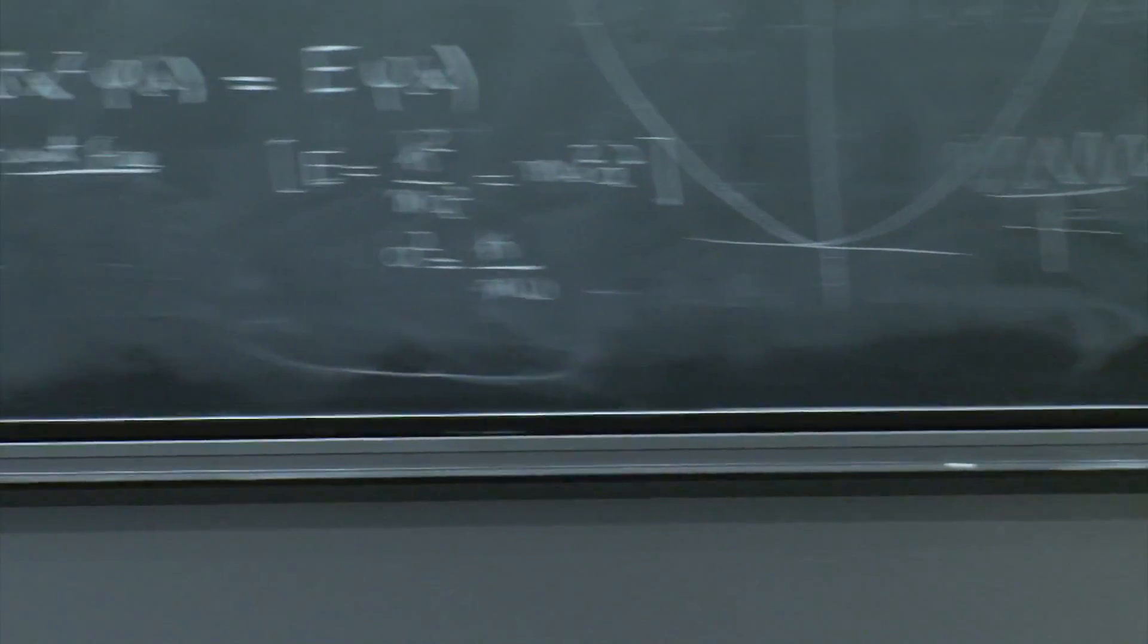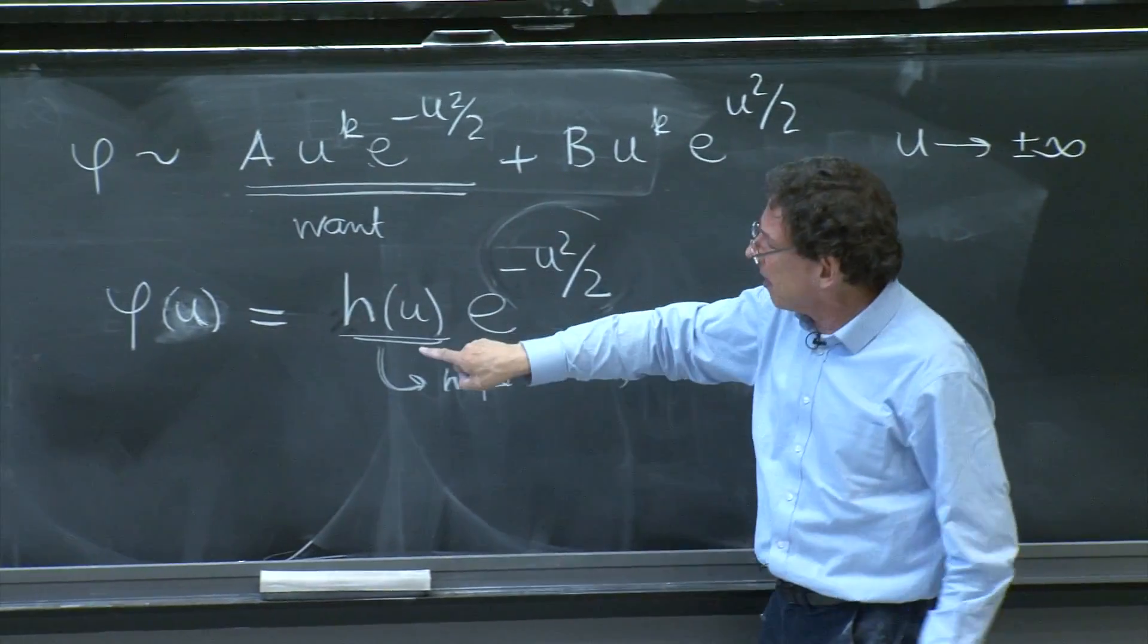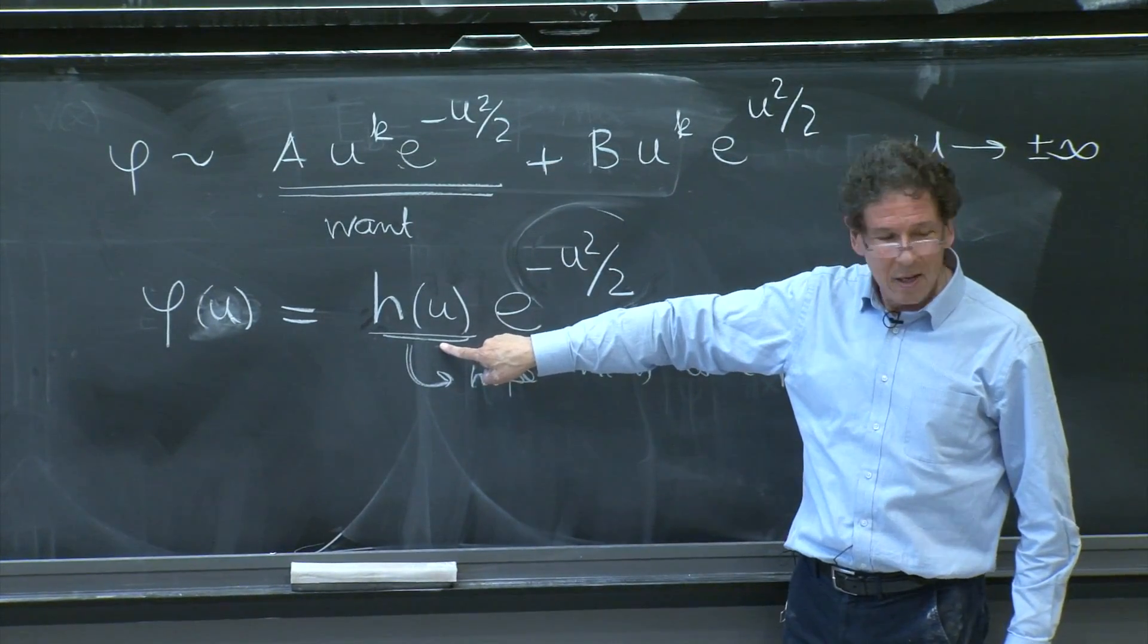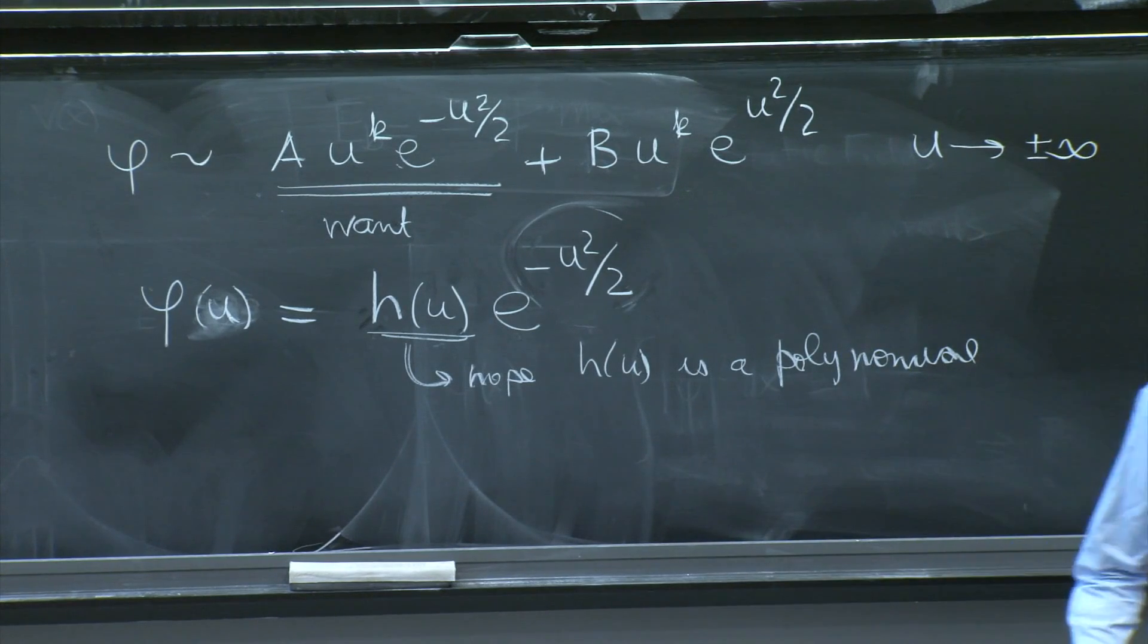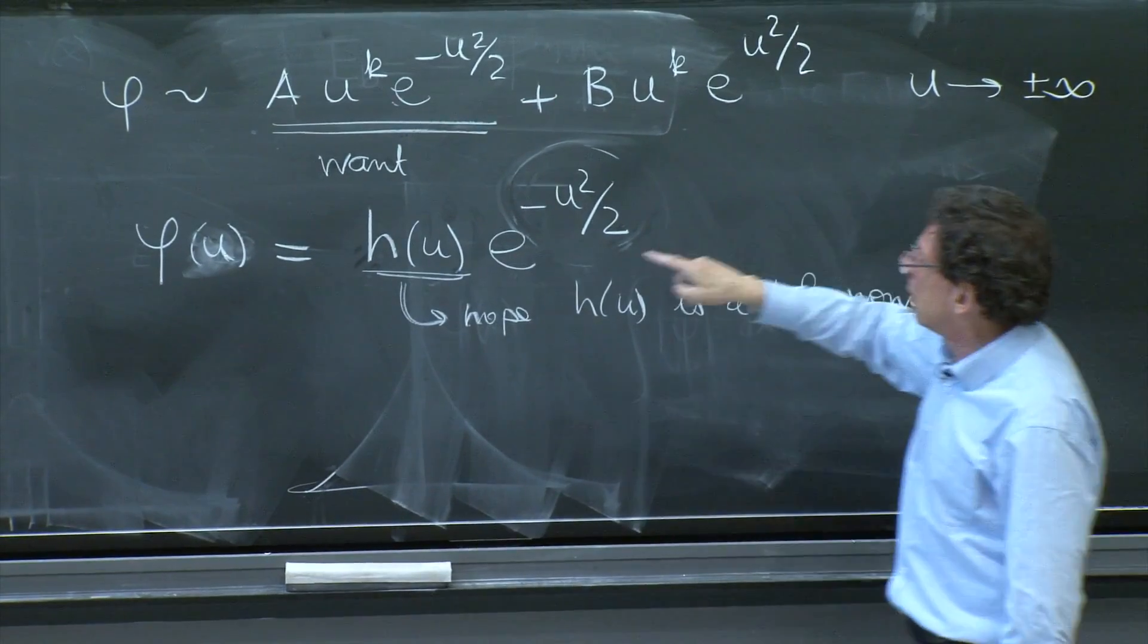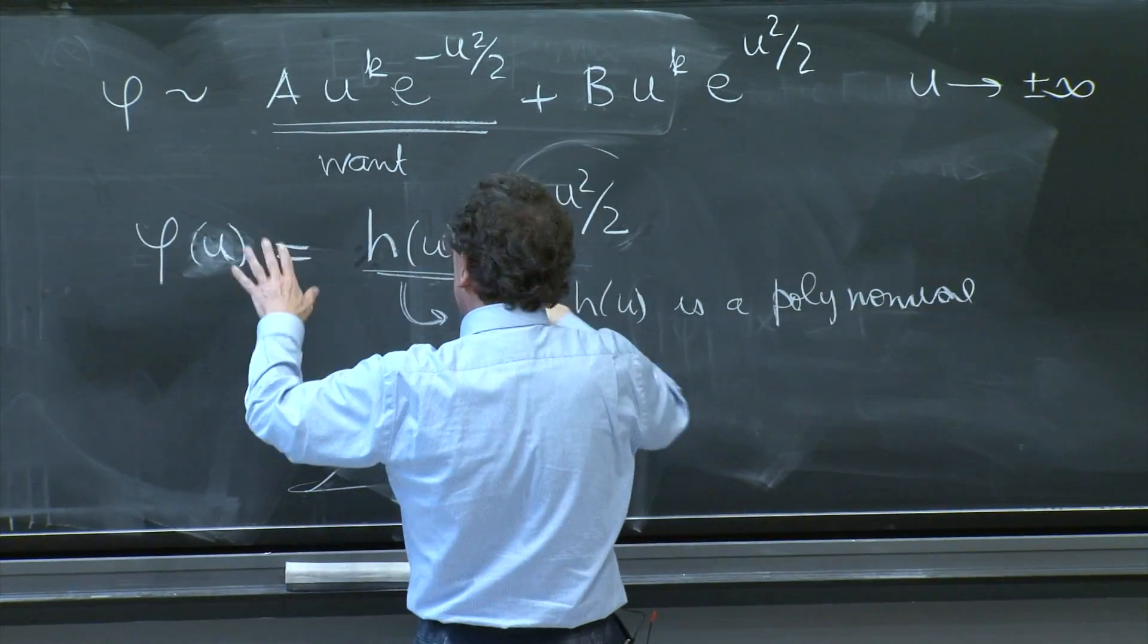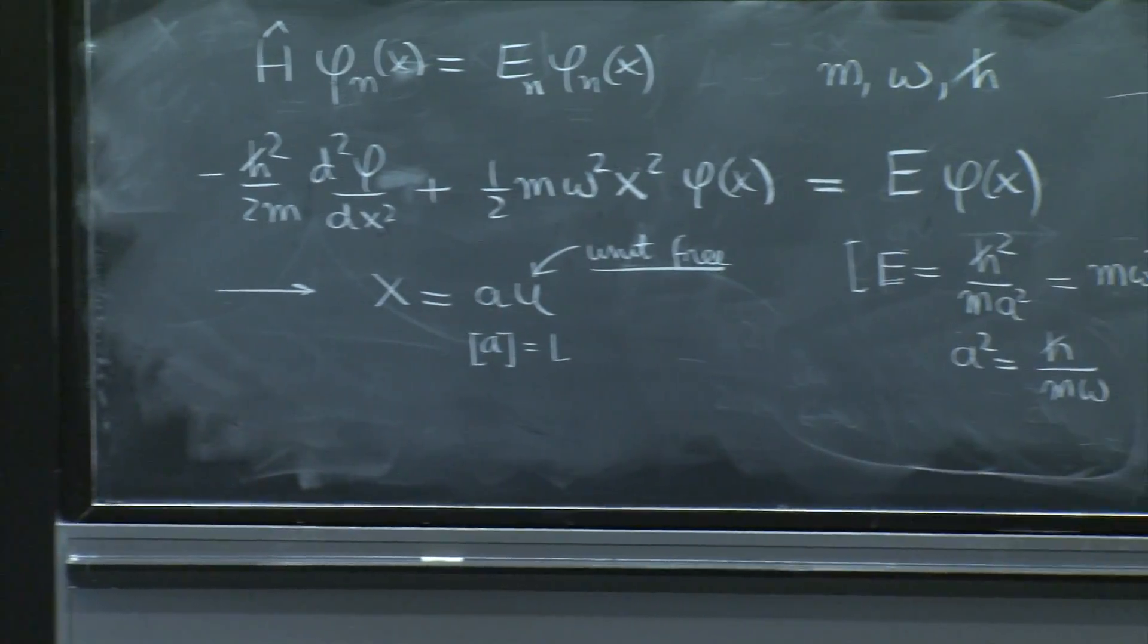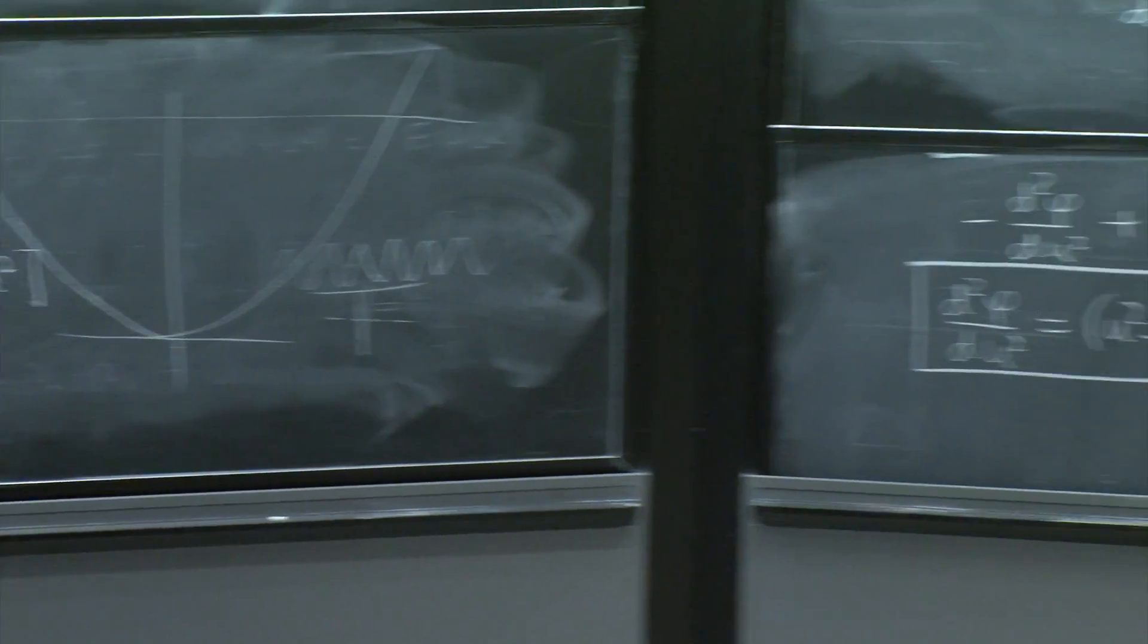But now that you've isolated the divergence, there is a hope that a polynomial will work. So for doing that, exploring that hope, I now have to substitute.